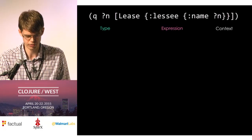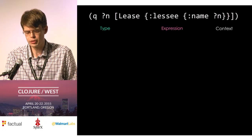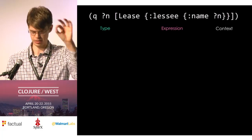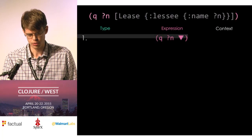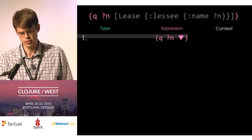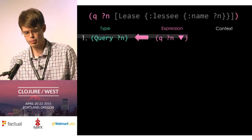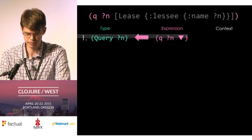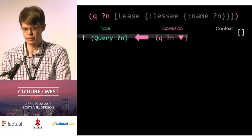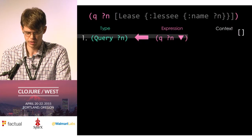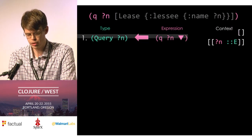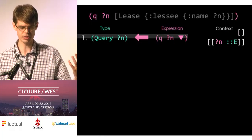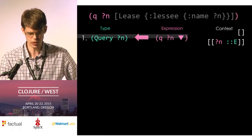I'll walk through how a type-checking algorithm tackles this — a really simple type system with no polymorphism and no higher-order functions. Type checking starts at the outermost expression, the query statement. We see it's got to be some query returning some type we don't know yet, and we're introducing a new variable n. We add to our context a pair with variable n marked as existential — there exists some type that n is, we just don't know what it is yet.